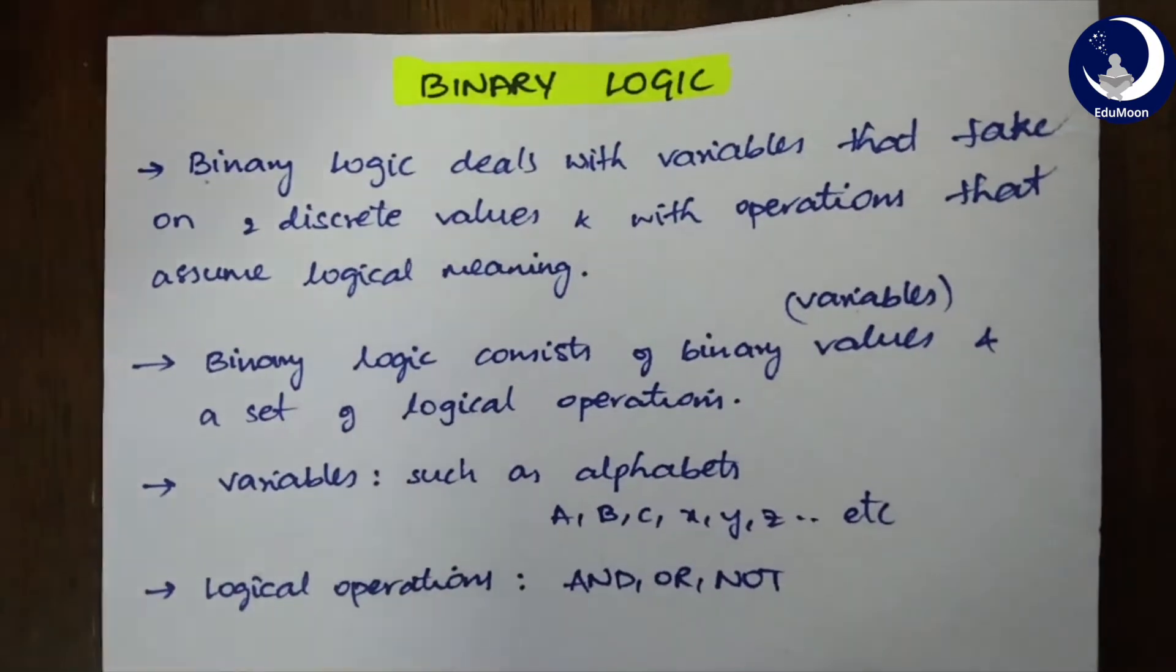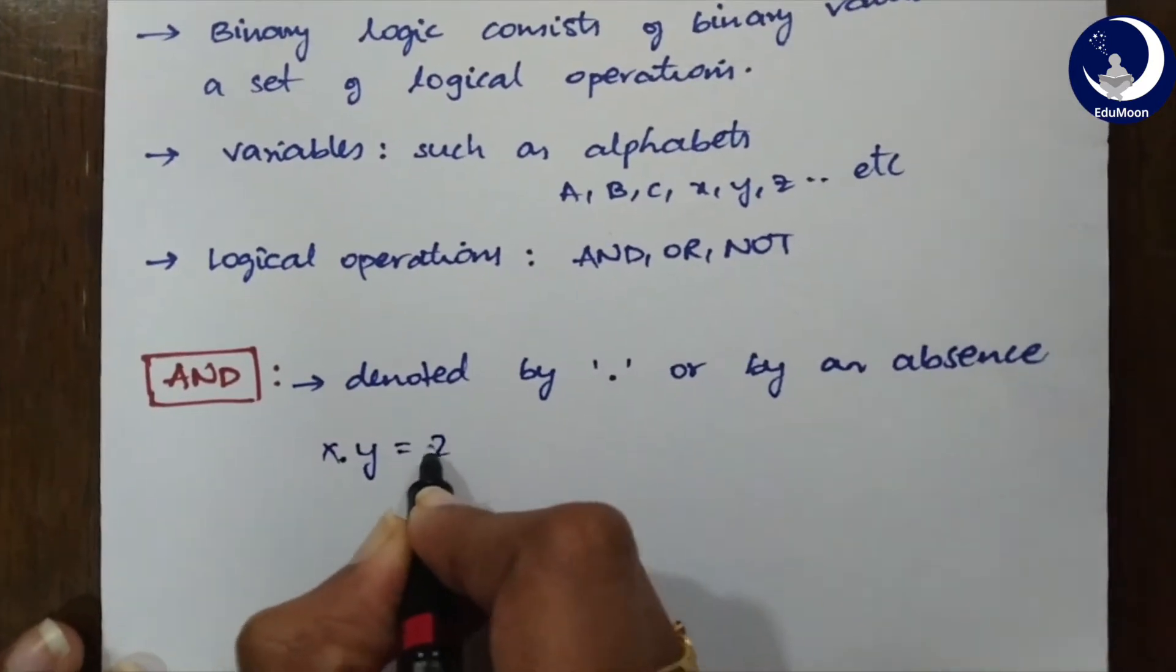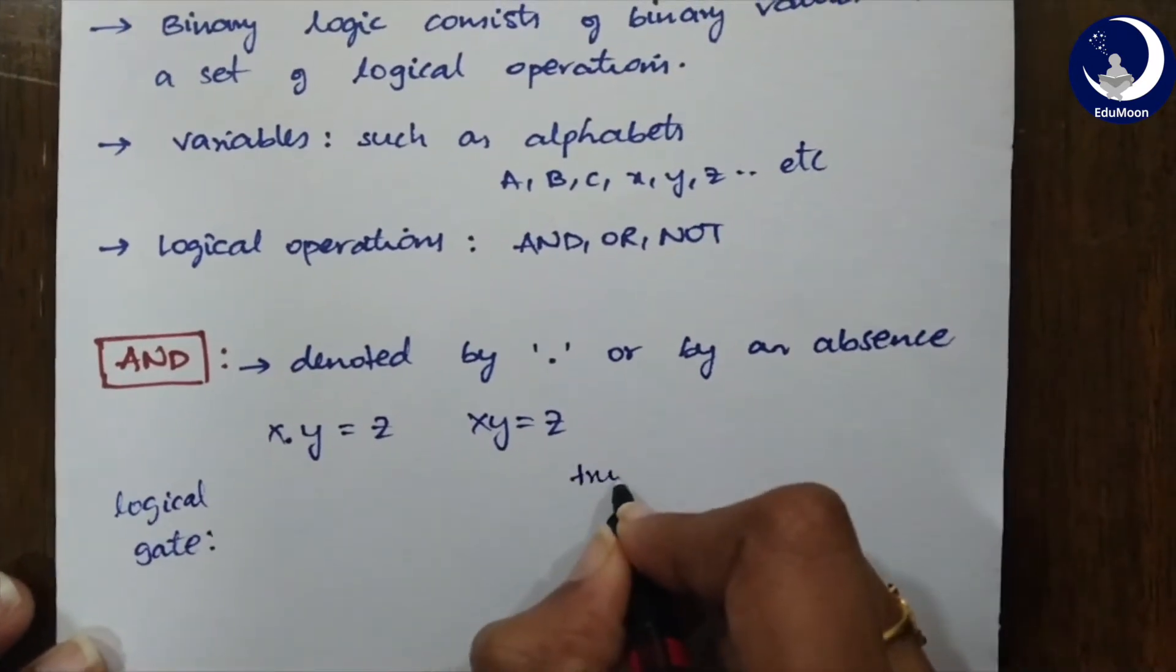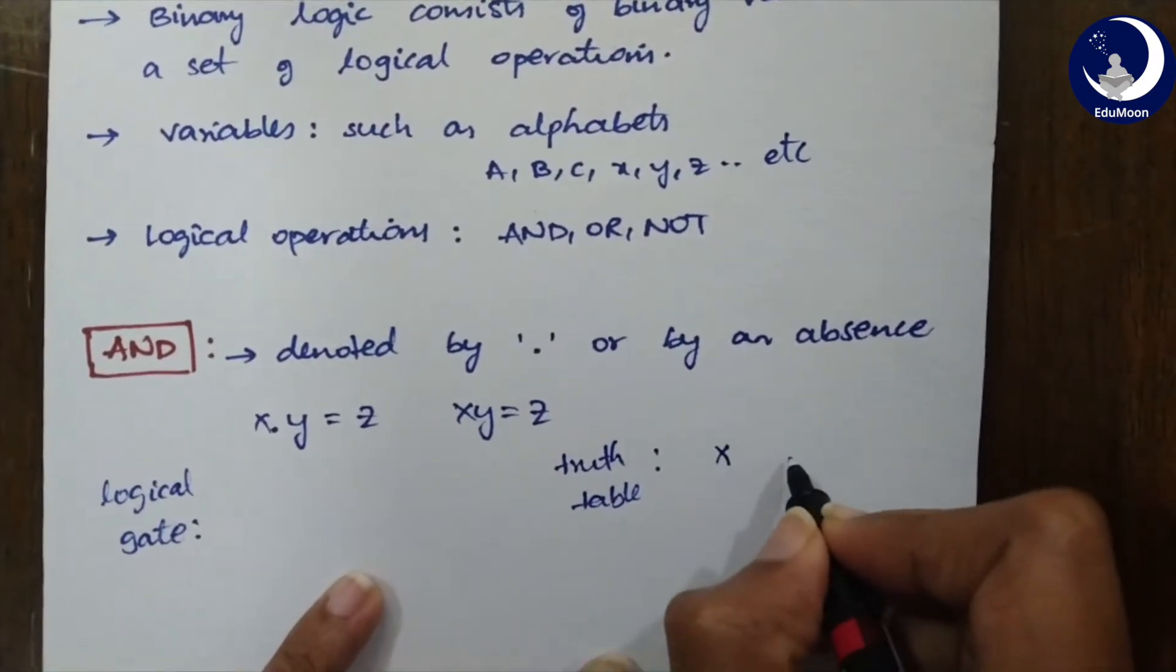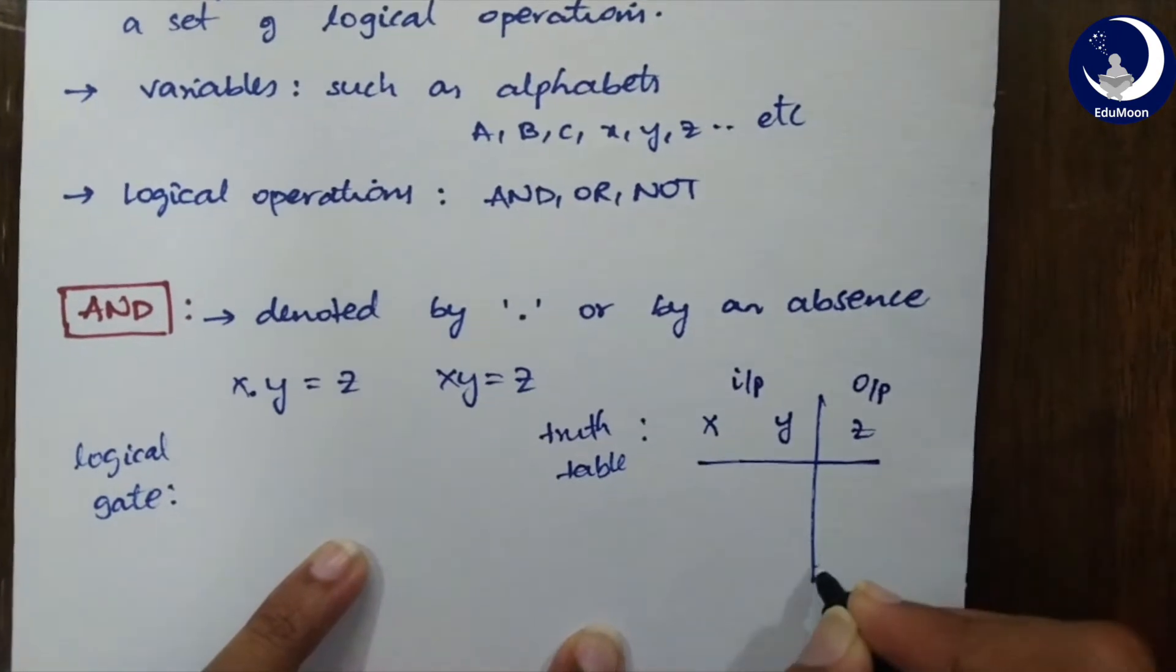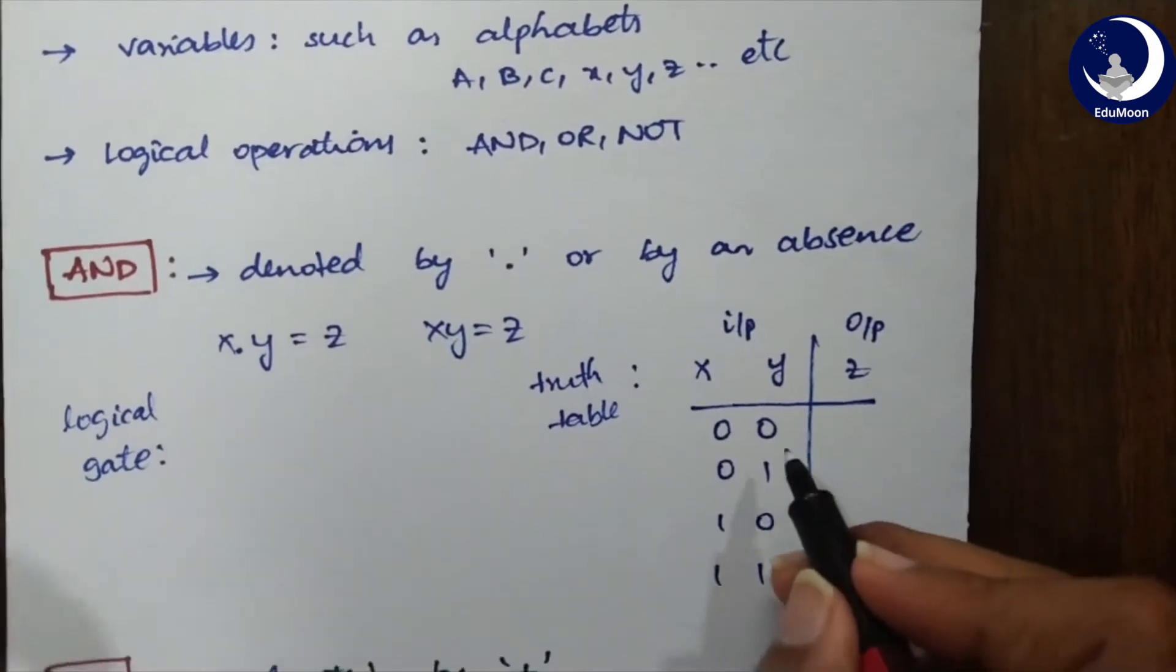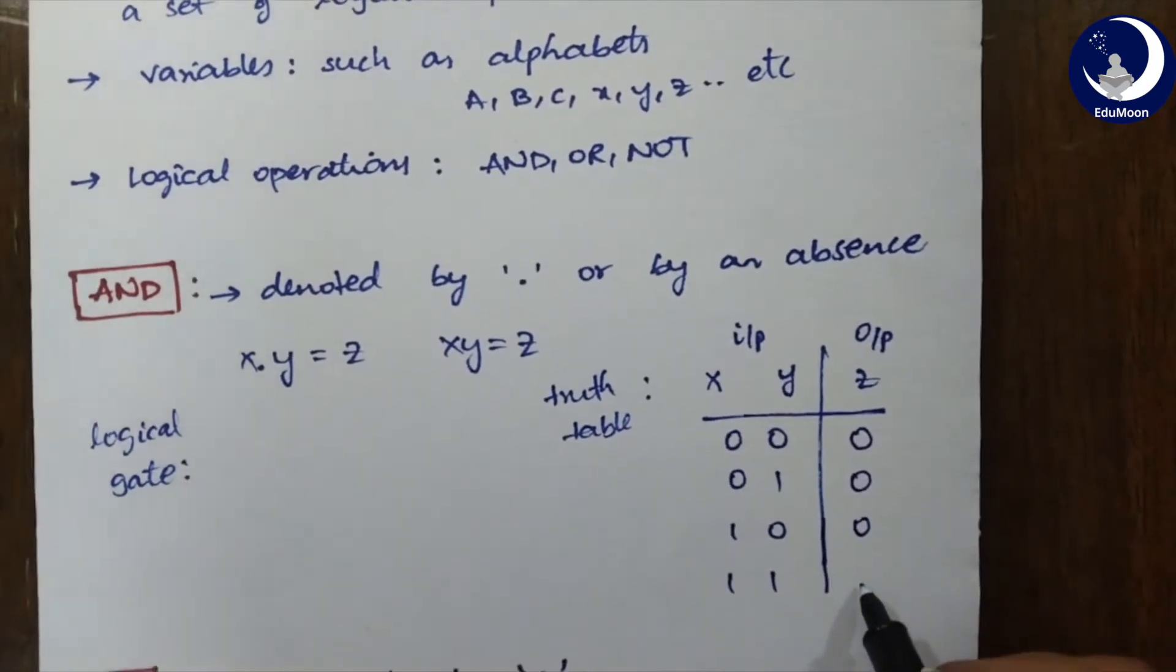What is AND? AND is generally denoted by a dot or usually by an absence like X.Y equals Z or XY equals Z. Both of them represent the same thing. Let's look into its logical gate and truth table. First let's look at its truth table. For example, if X and Y are inputs, then Z will be your output. When considering only two values, we have only four possible chances: 0, 0, then 0, 1, then 1, 0 and 1, 1. AND is basically like a multiplication operation. 0 and 0 is 0. 0 and 1 is again 0. 1 and 0 is 0. 1 and 1 is only 1.